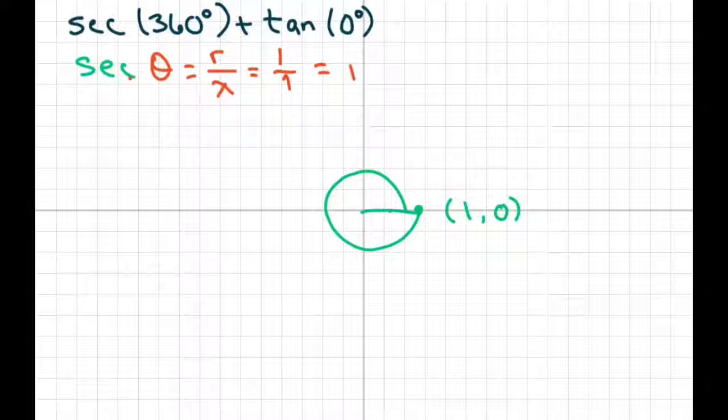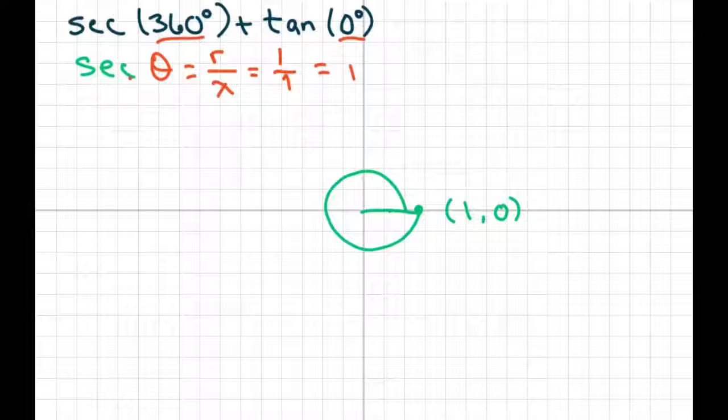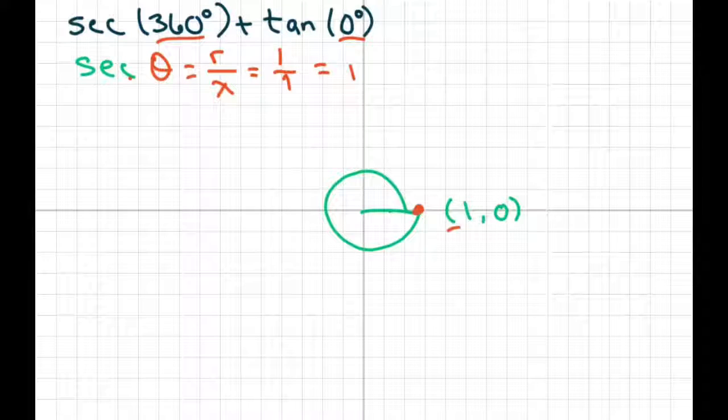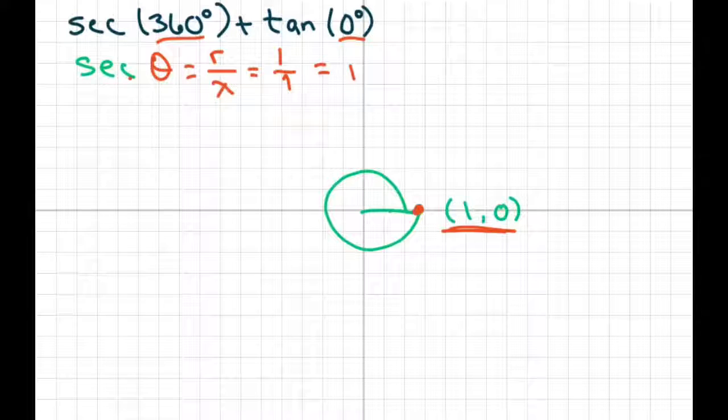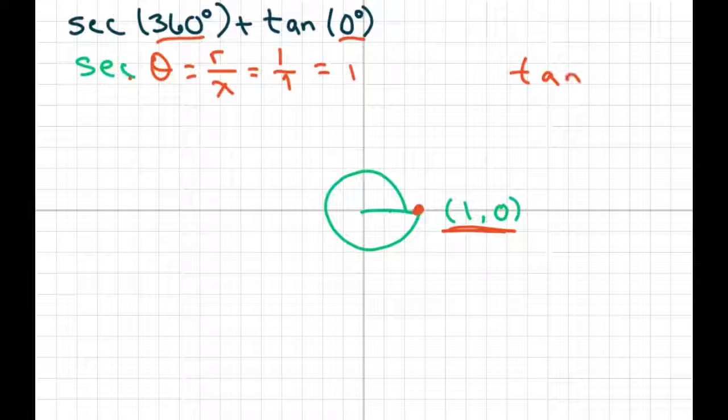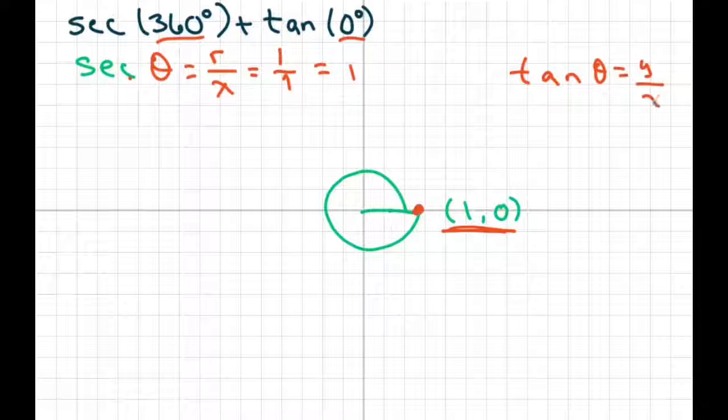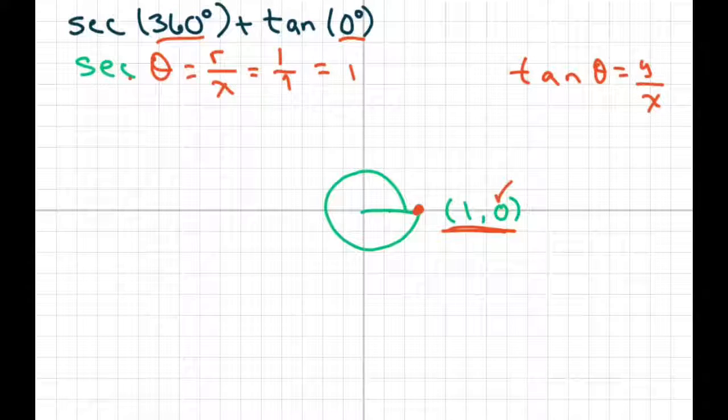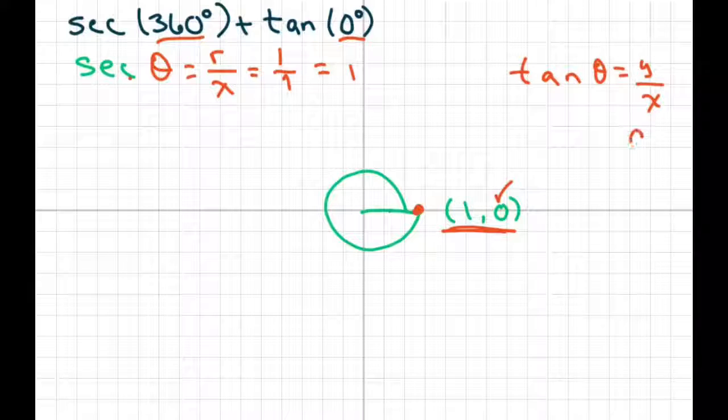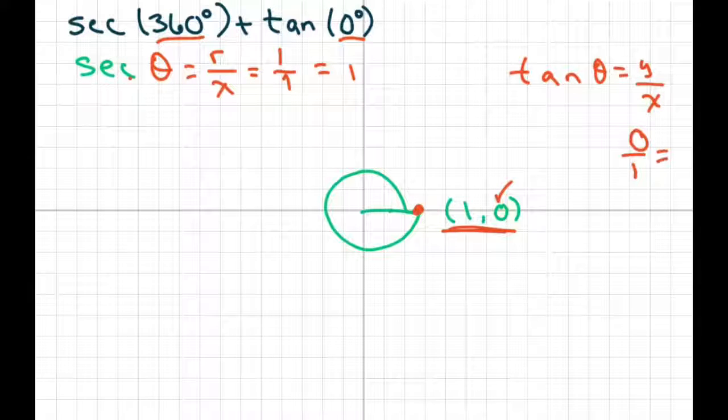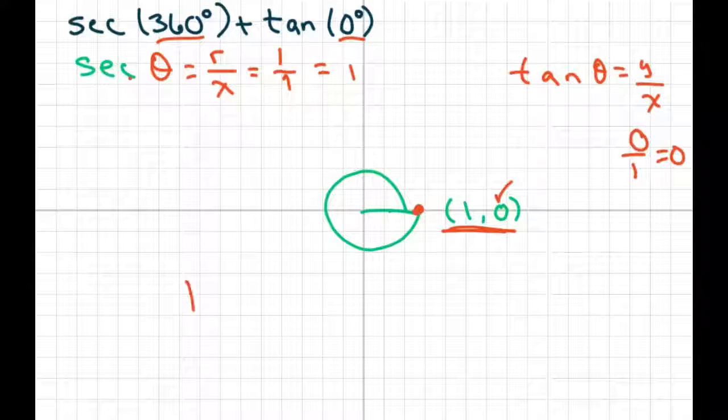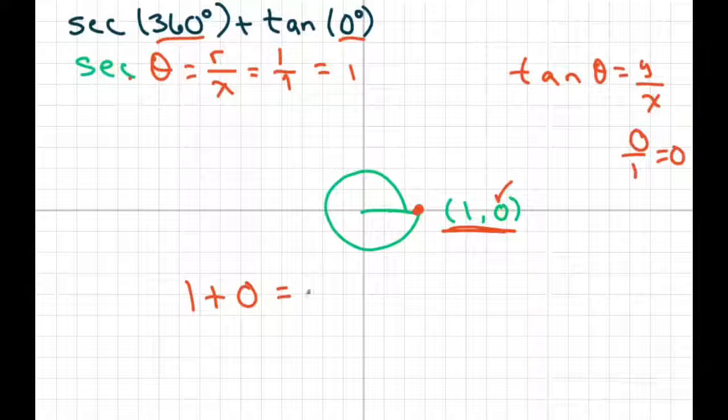And 360 and zero are coterminal angles. So we're right back to here again on this one. Tan of zero. Remember tan is y over x. So our y is zero, so we get zero over one, that equals zero. So basically, we have one plus zero equals one. And that's all.